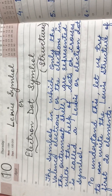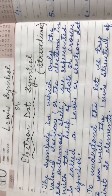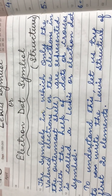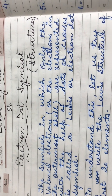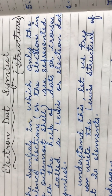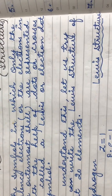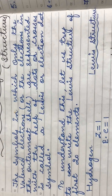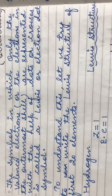Hello students, let us today discuss the topic of Lewis symbols, or electron dot symbols or structures. A Lewis symbol is one in which only the valence electrons, or the electrons in the outermost shells, are represented with the help of dots or crosses.